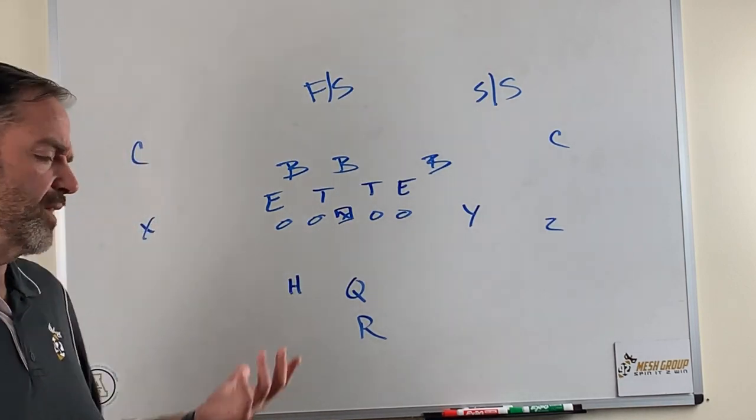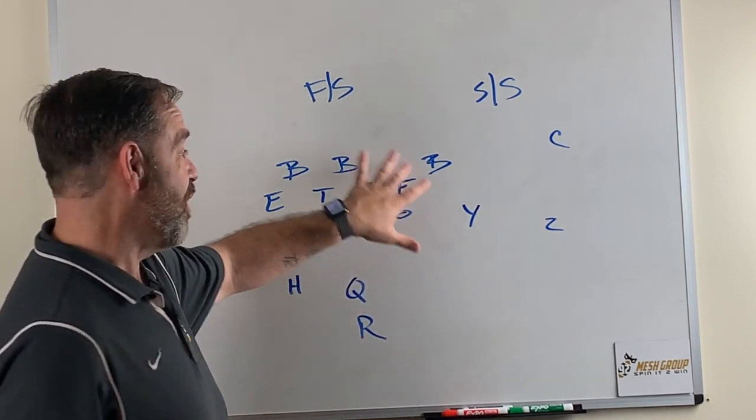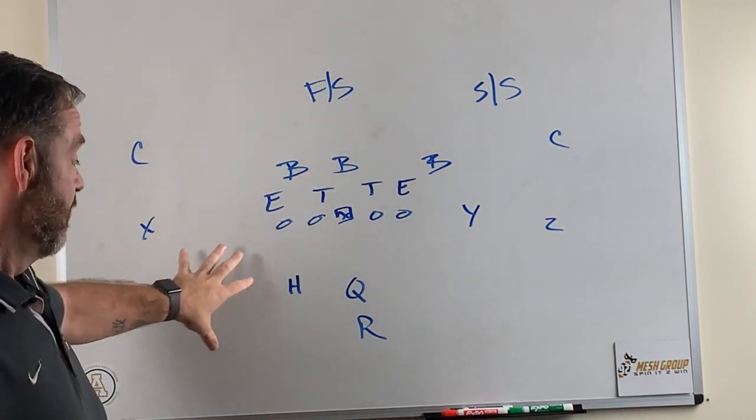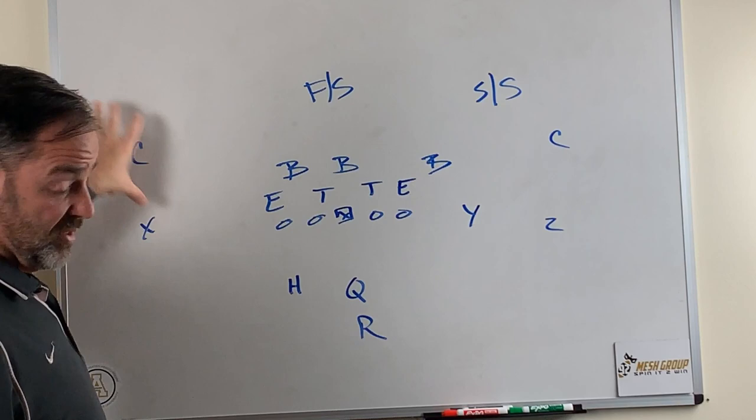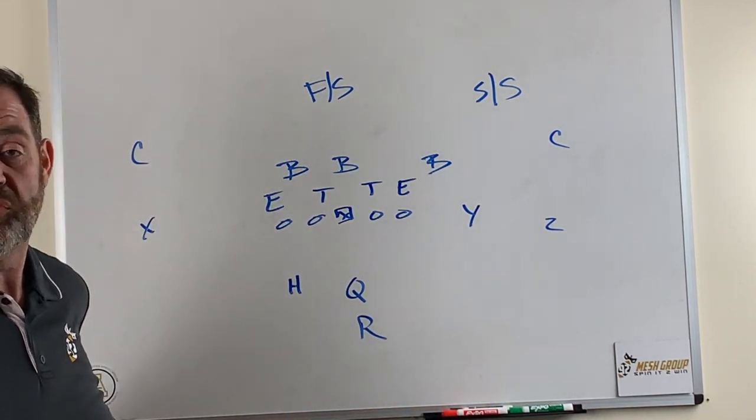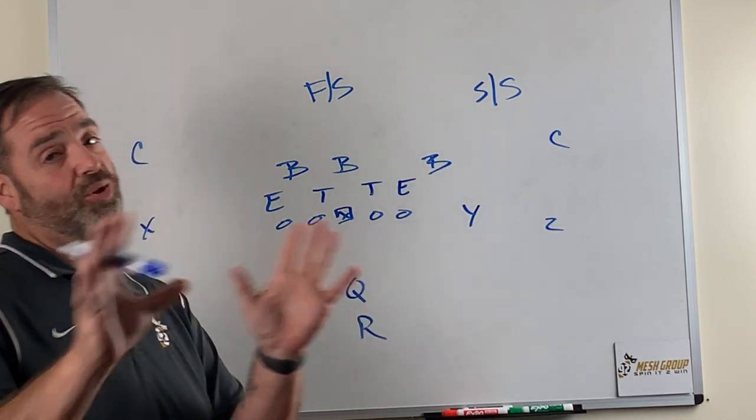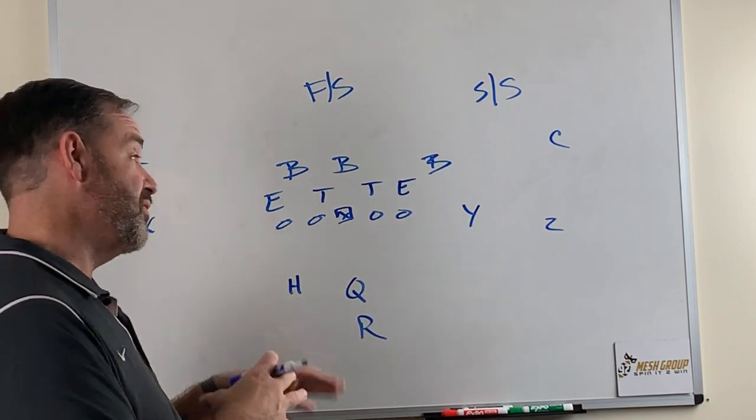I talked to Coach Mummey, and he said, well, Y-Cross is nothing but waggle. If you draw Y-Cross up out of air raid formations and then you compare it to the same route in Wing T, it's pretty much the same thing without the run fake and the roll. And it's the same way with the flood. So basically, sail is strong flood, Y-Cross is weak flood.